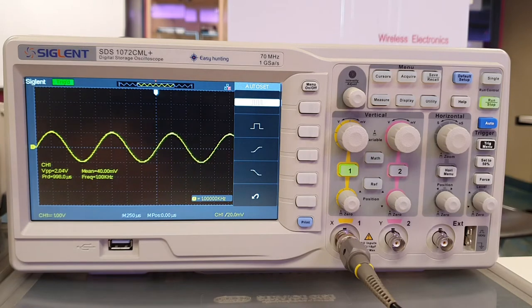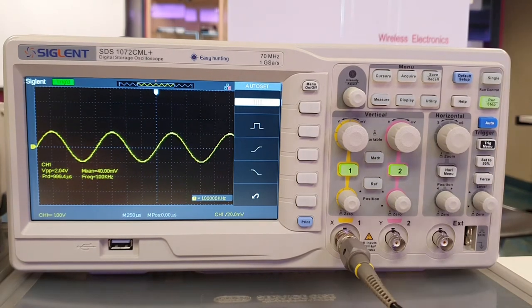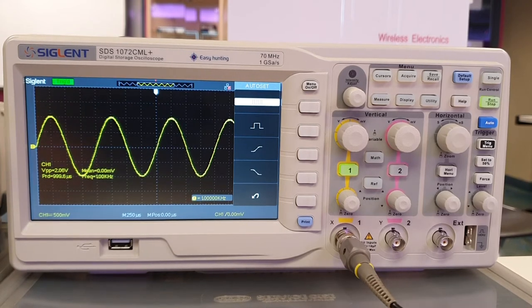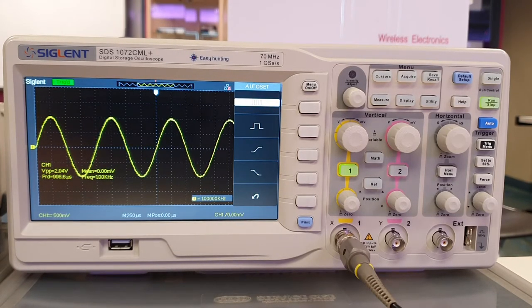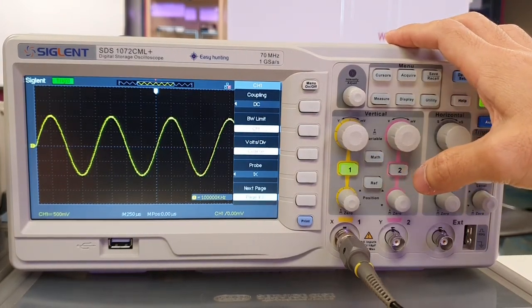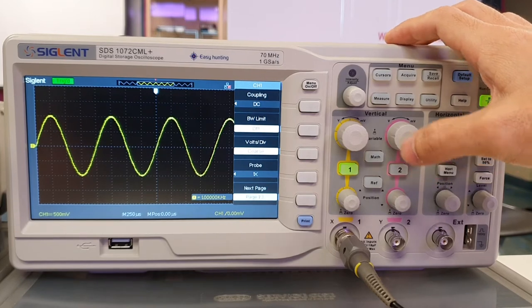Press the Auto button on the digital oscilloscope. Remember that this sine wave is an AC signal, and every time you press the Auto button, the default coupling mode is DC. We need to change the coupling mode to AC by pressing Channel 1 button, then press the button next to coupling till it selects AC.